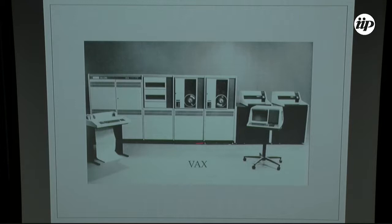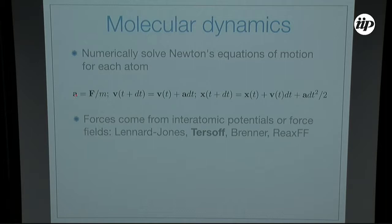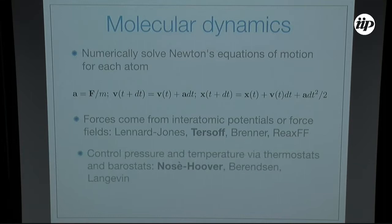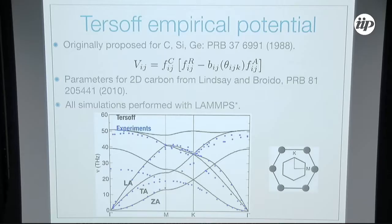For this we use our computers, of course. In molecular dynamics, we solve Newton's equations of motion for each atom — calculate the acceleration from the force, then the velocity and position for the next step, then go back to acceleration again. These forces come from interatomic potentials or force fields such as Lennard-Jones, Tersoff, Brenner, REAX, and so on. You can control pressure and temperature via thermostats and barostats, and use periodic or free boundary conditions.